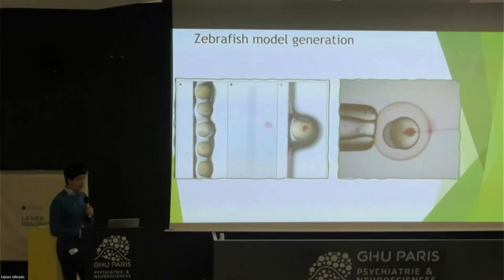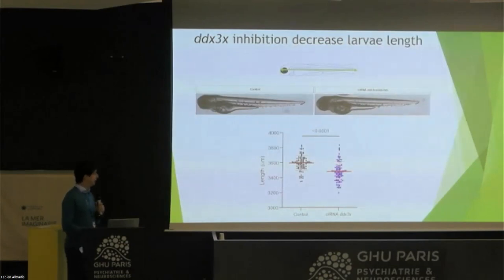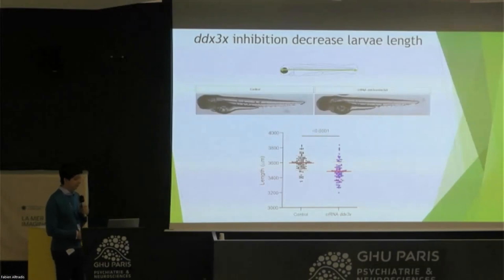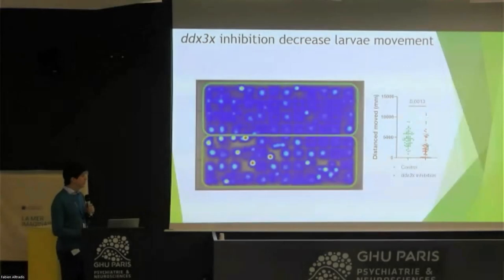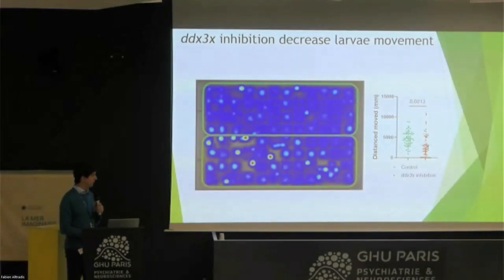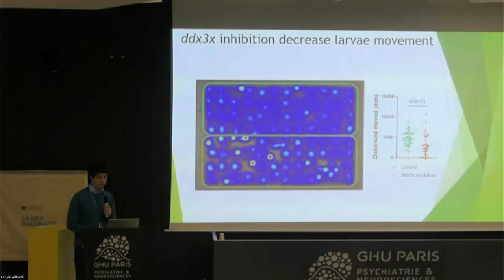When we started to characterize this model, we found that fish with DDX3X inhibited were smaller, suggesting a delay in development. Also, when we checked the movement of these fish, they were moving less than the controls. So we now have two characteristics to use when screening drugs for effect.